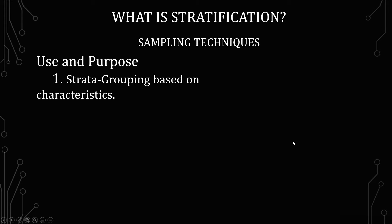The next is to understand the use and purpose of stratification. What you use in stratification are called strata — or in singular, a stratum. Those are groupings based on characteristics, and those characteristics could be anything depending on your field. In social science this would be income level or other demographics. In biological sciences it would be weight, height, or sex.